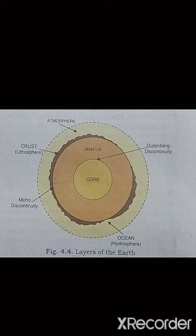Below the crust, the second layer is the mantle. In between the crust and mantle there lies a discontinuity named the Mohorovičić discontinuity, which forms a boundary between the crust and the mantle. At this boundary, earthquake waves change speed. It is found at a depth of about 8 km below the oceans and about 32 km below the continents. The Mohorovičić discontinuity has the characteristics of both the crust and the mantle.